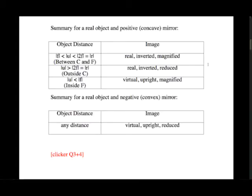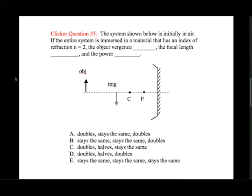Clicker question number three: the system shown is initially in air. If the entire system is immersed in a material with index of refraction n equals 2, the object divergence does something, the focal length does something, and the power does something. Choose the best of the five answers. Here's a chance to pause while you think about your answer.